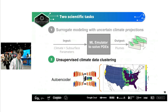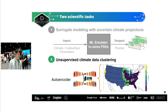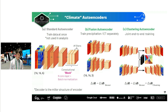The second task is constructing an unsupervised climate data clustering pipeline, where we can extract representative precipitation and evapotranspiration values for each unique climate region, to serve as input data for the machine learning emulator. We use two autoencoder variants: one is a standard autoencoder, and the other is a retrained end-to-end clustering autoencoder, which is very scalable when the clustering size is large.